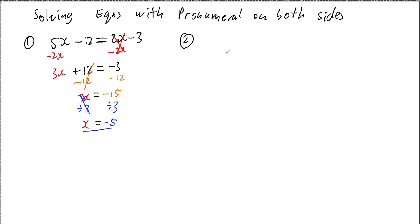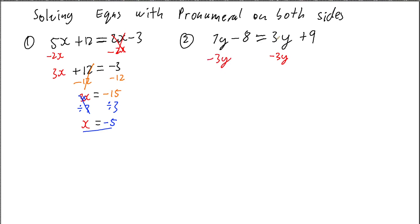Let's have a look at a second one. So my second one, I've got 7y minus 8 equals 3y plus 9. So the process is exactly the same. I look at my pronumerals. I see I've got 2 and 1 is on either side of our central equals sign. And I've got to cancel one out. I'm going to pick on the smaller one because it typically is easier. So I'm going to cancel out my minus 3y. And if I minus 3y here, it means I need a minus 3y over here. So my 3y is cancelled. 7y take 3y on my left gives us 4y. And I haven't touched my minus 8 or my plus 9. So now I've got 4y minus 8 equals positive 9.